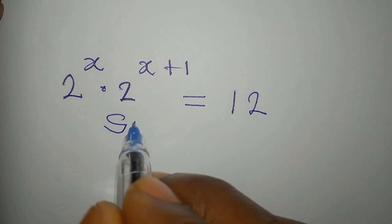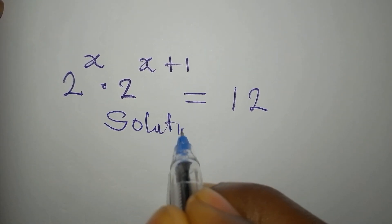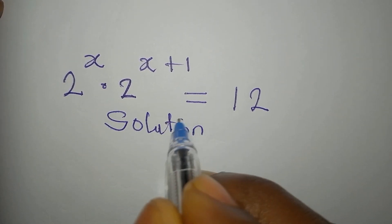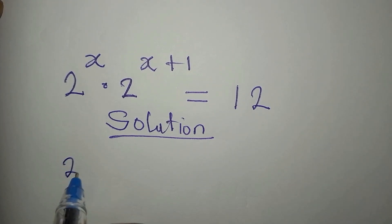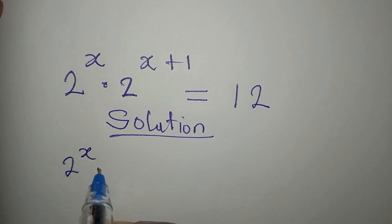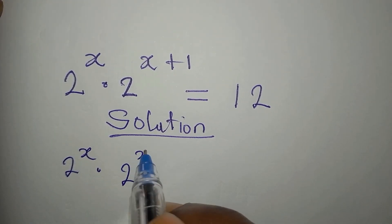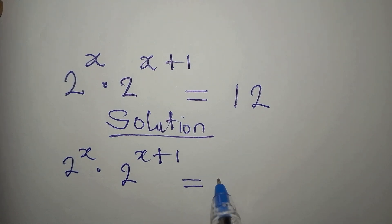Hello everyone. Here we have a problem to deal with: 2 to the power of x multiplied by 2 to the power of x plus 1 equals 12.